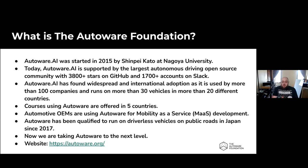Originally AutoWare was started as AutoWare.AI, which was based on ROS1, started back in 2015 by Shinpei Kato at Nagoya University. AutoWare.AI is currently supported on a huge number of platforms and runs on many different vehicles. But what we're mostly talking about today is AutoWare.Auto, which is the newest and best-supported version of AutoWare.